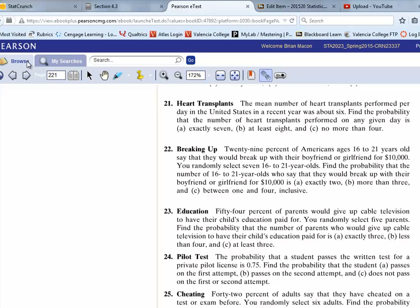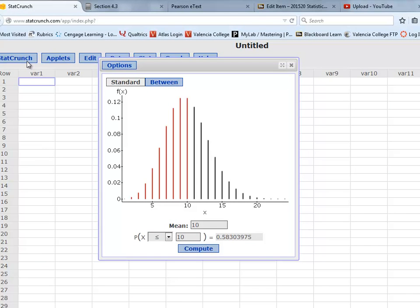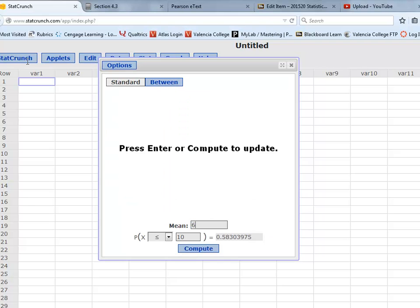So we're told that the average, or the mean per day, is about 6. And we want to find the probability of it being 7. So we're coming to StatCrunch. Once I've chosen my Poisson, I'm going to put my mean of 6.